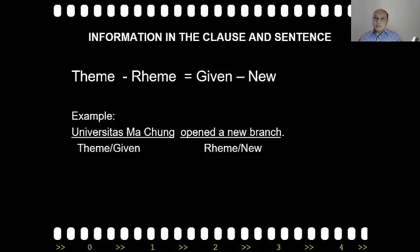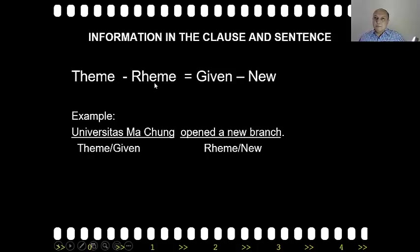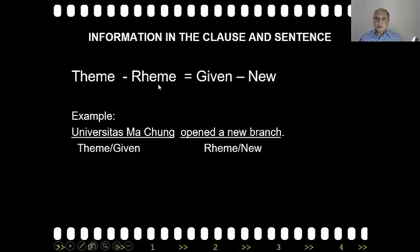Now let's start with the clause and sentence level. Information at the clause and sentence level can be organized as simply as this: the theme and rheme. The theme and rheme somehow corresponds to given information and new information. Given information is the theme, and new information is the rheme.